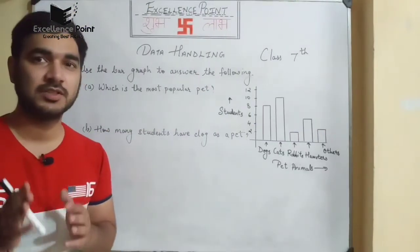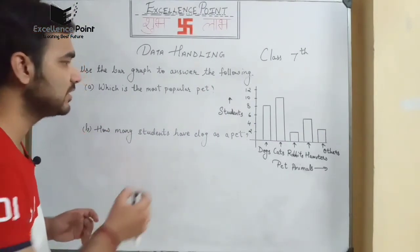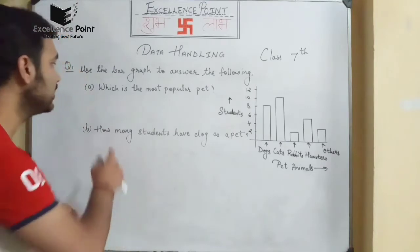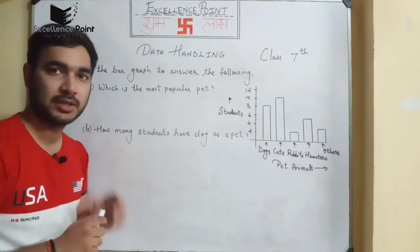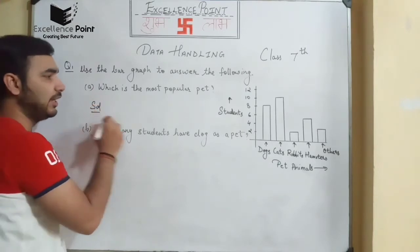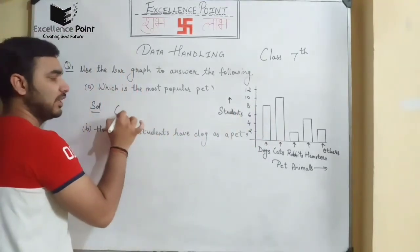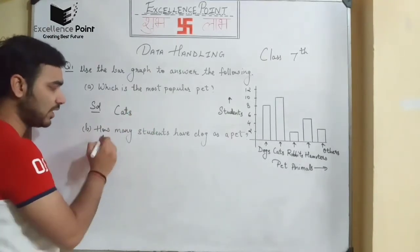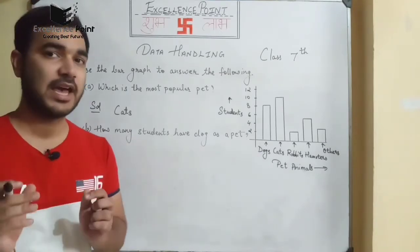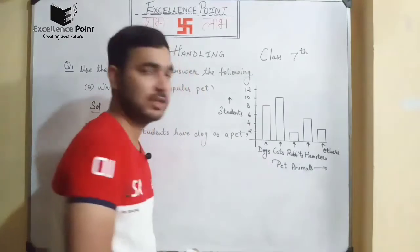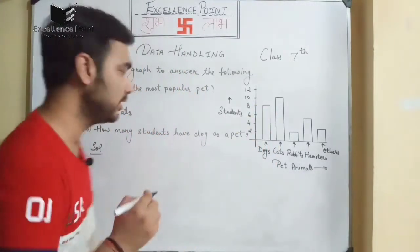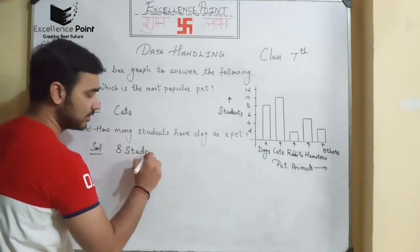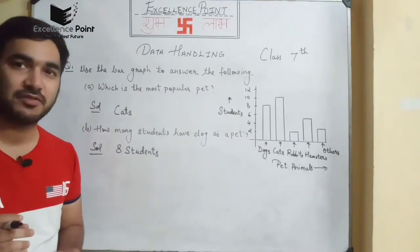Question number 1 is an observation type question. You will see the graph and we have to identify answers based on it. The most popular pet is cats, as they are the highest on the graph. For the second question, asking how many students have dogs as a pet — there are eight, so eight students is the answer.